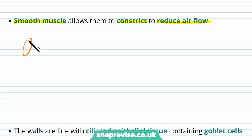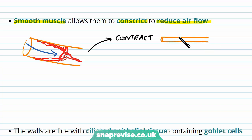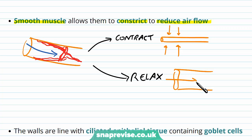The smooth muscle allows constriction of the tube to reduce airflow. If we start inhaling pollen or dust, the lungs respond by contracting the smooth muscle so the tube becomes narrower, reducing air flow and the risk of damage. In asthma, people have hypersensitive airways where this happens excessively, and the tubes contract so much that people struggle to breathe. The smooth muscle can also relax, widening the airways and allowing more air to flow through.